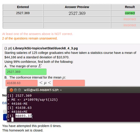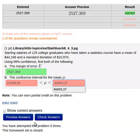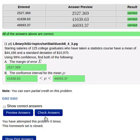And we'll find the upper bound of that confidence interval by 44,166 plus that margin of error. And we can check our answers, and of course it's right.